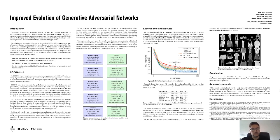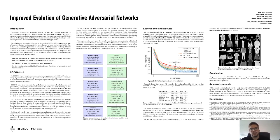QEGAN version 2 achieved in the last generation an average FID score of 24.8, which is 22% better than the best DCGAN approach. We test these findings and show that the improvement of QEGAN version 2 over all other solutions is statistically significant.